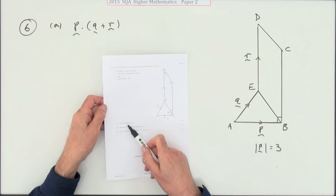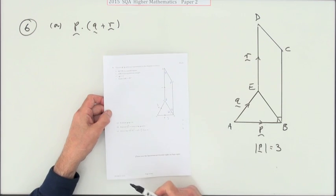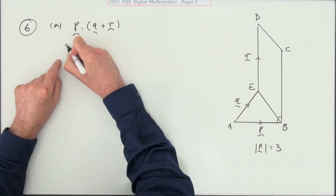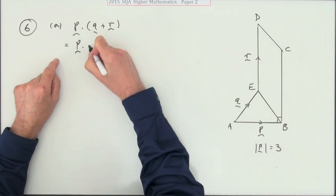What does it say? Evaluate p dot (q plus r). It tells you this is a parallelogram and that's an equilateral triangle. Well, the first thing you would do without even looking at anything would be expand that: p dot q plus p dot r.